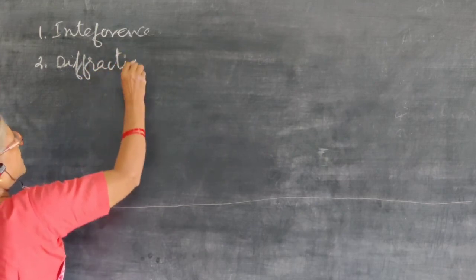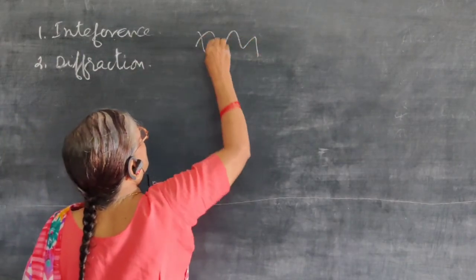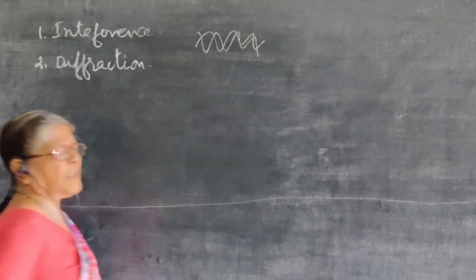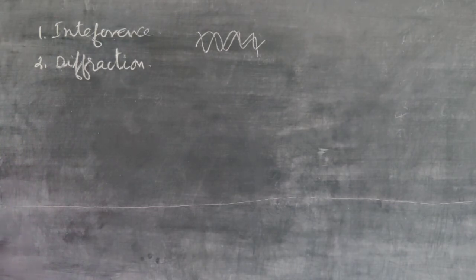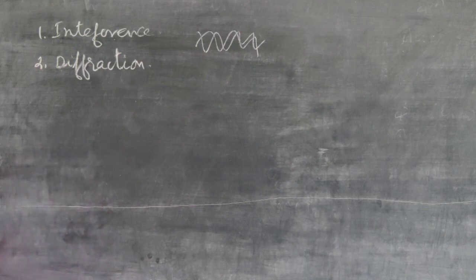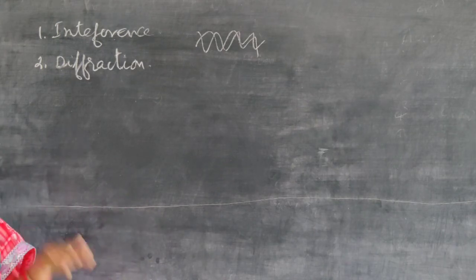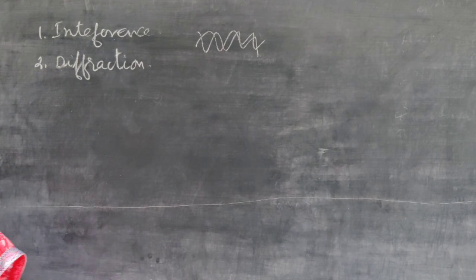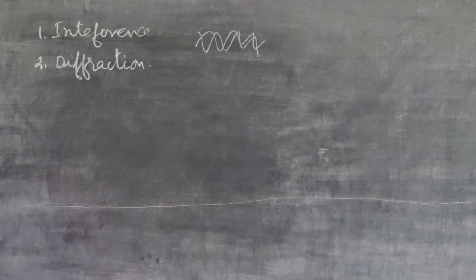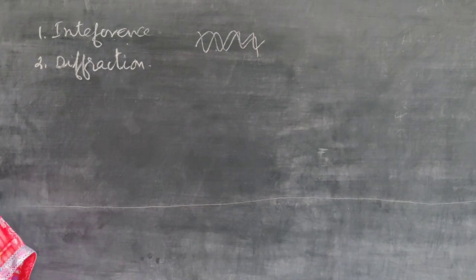The theories which can explain the wave nature of the electron are two: one is called interference, and the second property is called diffraction. These two properties are of waves. According to the interference phenomenon, many waves can transit in one path and interfere with each other. Waves can interfere with each other, but particles cannot. This phenomenon is called interference.